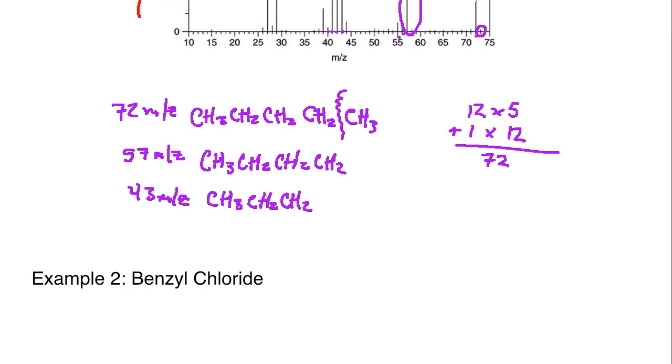We could also go down to an ethyl, and if we had an ethyl group that would be 29 m/z. Keep in mind these would all likely have positive charges associated with them.